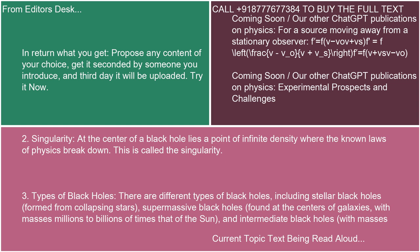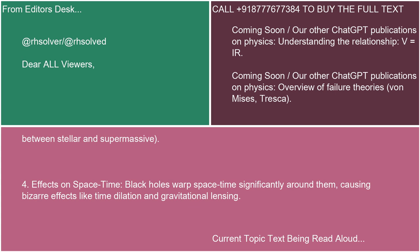Third, types of black holes: there are different types, including stellar black holes formed from collapsing stars, supermassive black holes found at the centers of galaxies with masses millions to billions of times that of the sun, and intermediate black holes with masses between stellar and supermassive.